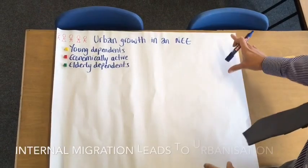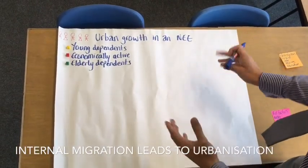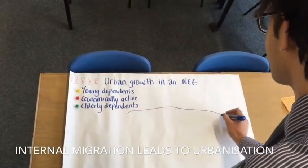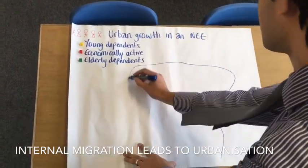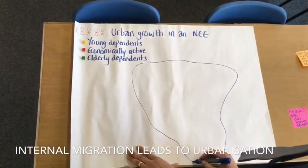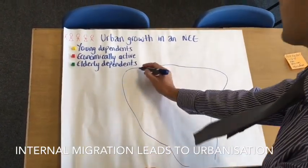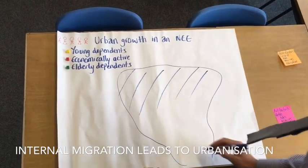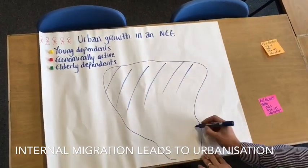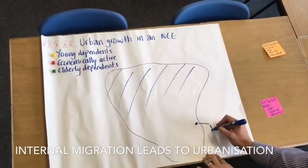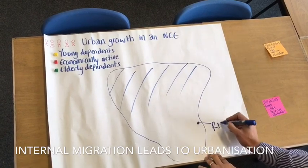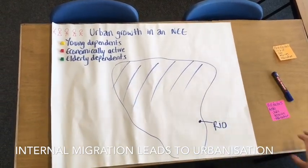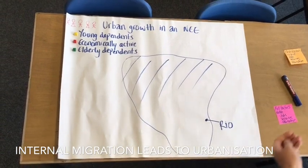In this demonstration I'm going to show you how Rio has grown. If I draw an outline of Brazil, up here is the Amazon rainforest which is generally quite rural, and down here is Rio. Rio is on the coastline, it has five major ports, and therefore it's a very popular place for people to migrate to.